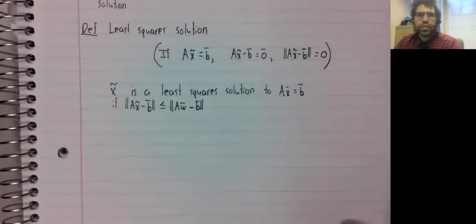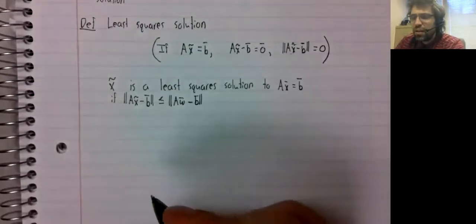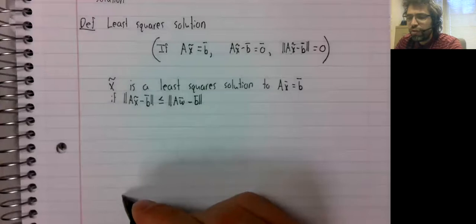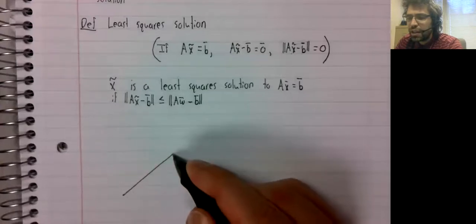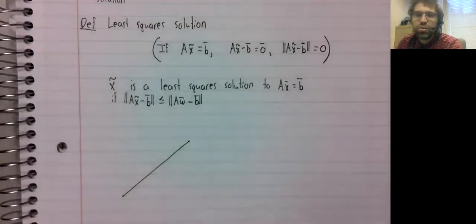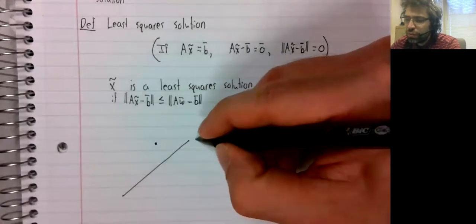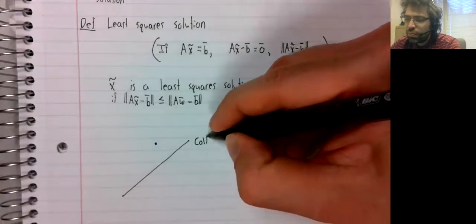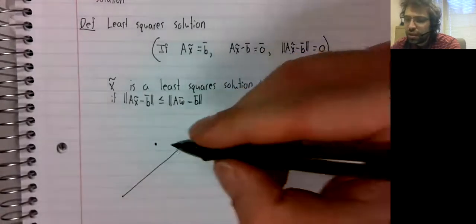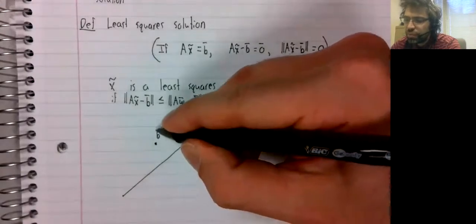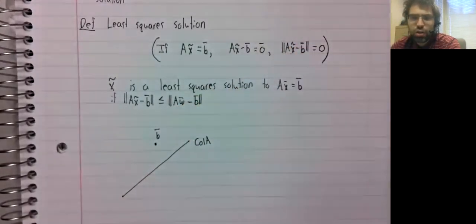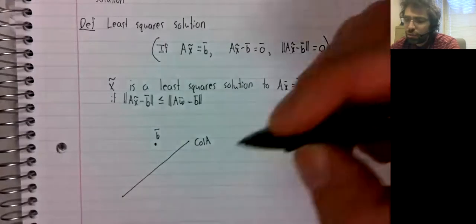We have already stated the method for finding least squares solutions. Here's the column space of A. Here's b not on the column space.